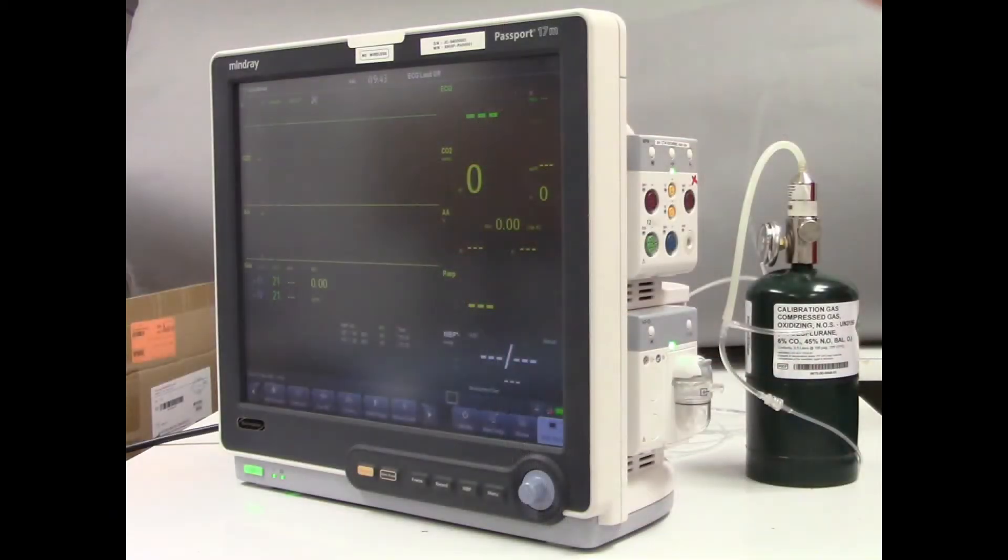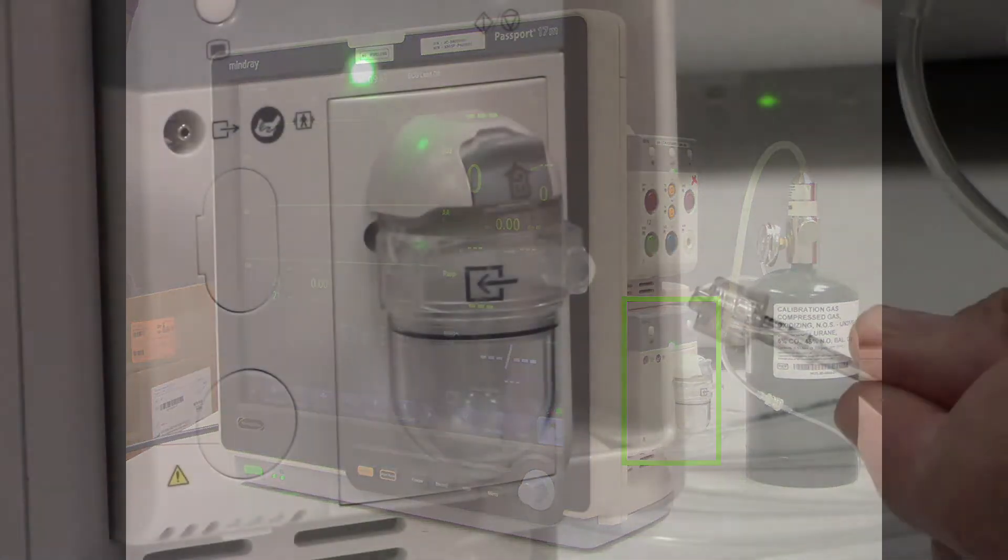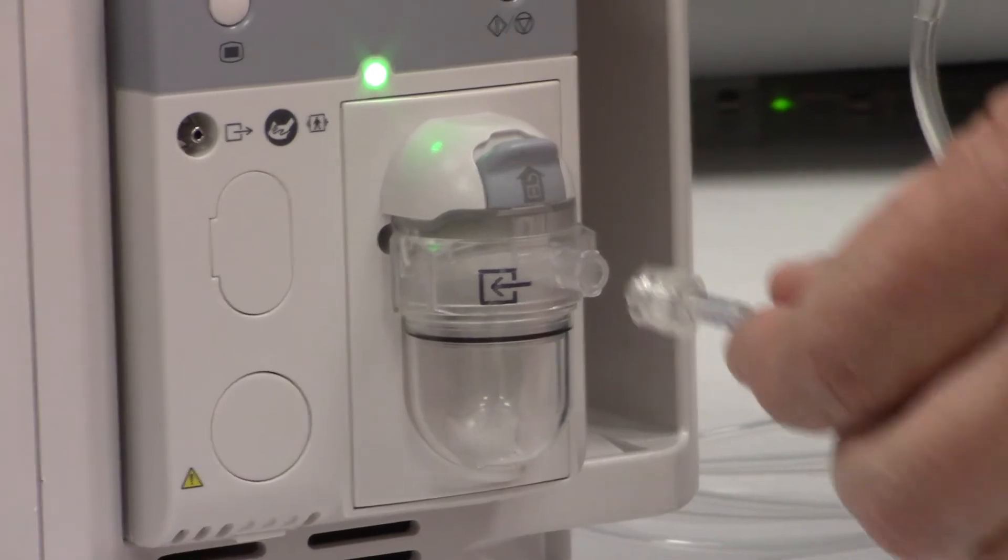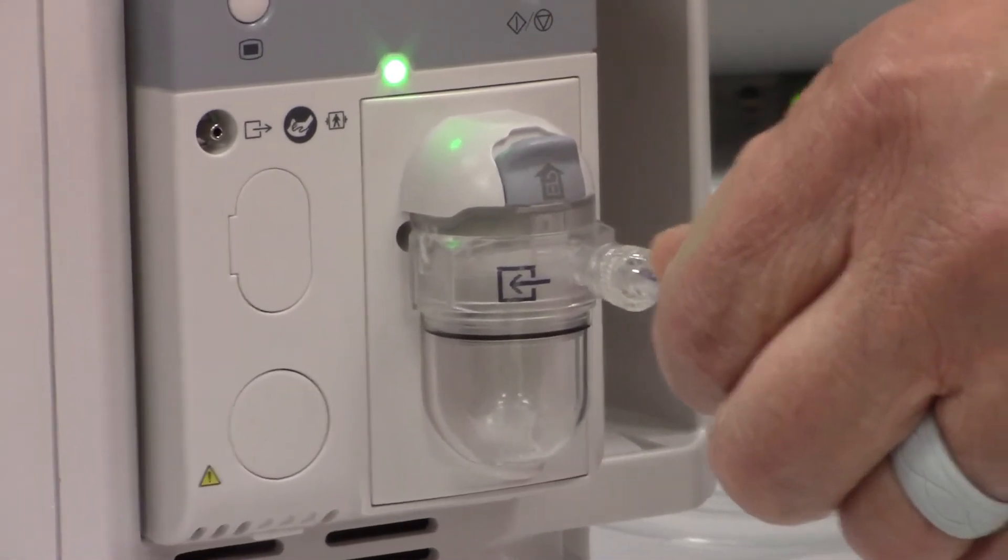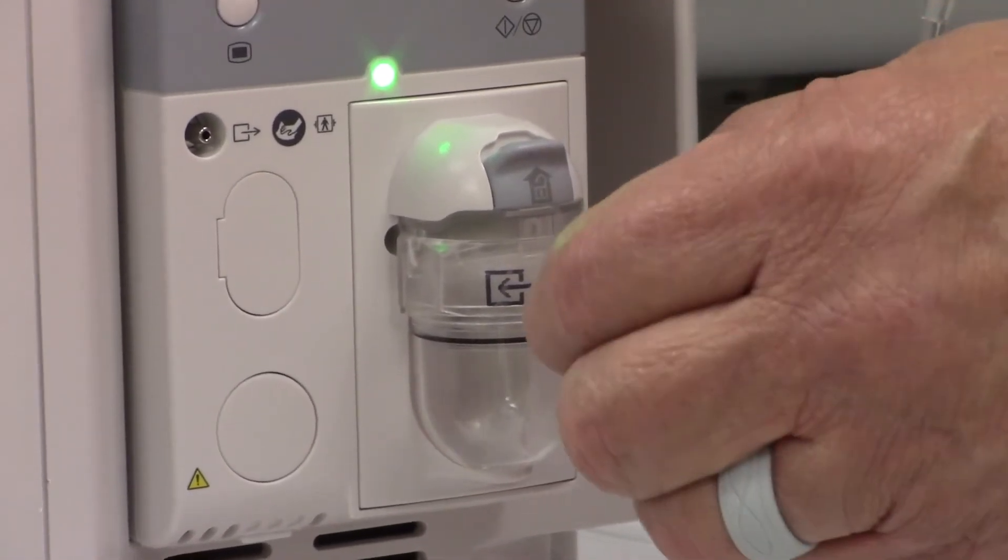Make sure that the AG module has been in the monitor, and both the monitor and the module have been running for about 20 minutes before you attempt to calibrate. This will ensure everything is warmed up and thermally stabilized. Attach your sample line to the water trap on the AG module to be calibrated.